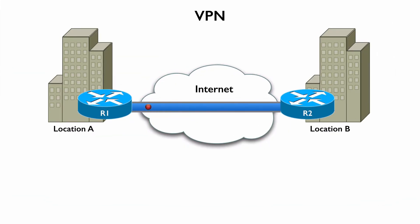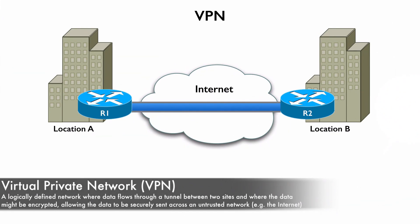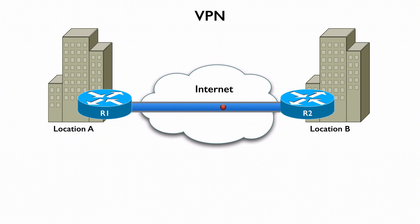The next WAN technology we want to talk about is a VPN, a virtual private network. The cool thing about a VPN is it can allow us to have a private conversation over an untrusted network like the internet. A VPN actually gets established over your internet connection.